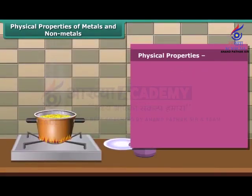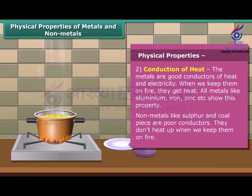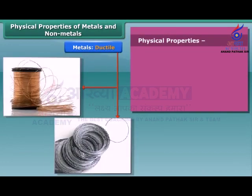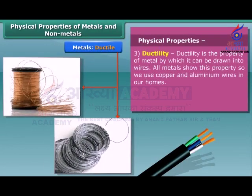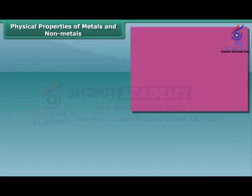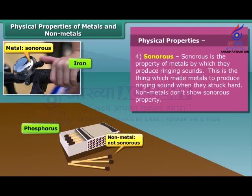The next property is conduction of heat. Metals are good conductors of heat and electricity, while non-metals are poor conductors. The property of metal by which it can be drawn into wires is called ductility. It is the third property of metals. Non-metals don't show ductility. Now let's talk about another property of metals, that is sonorous. Metals produce ringing sounds when they are struck, so are said to be sonorous. Materials other than metals are not sonorous.